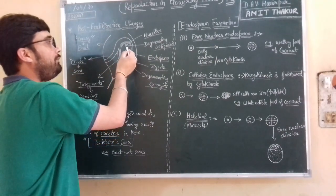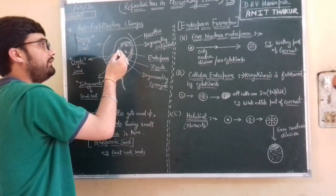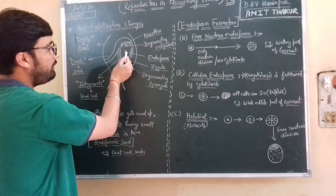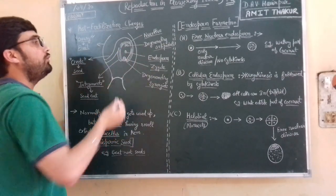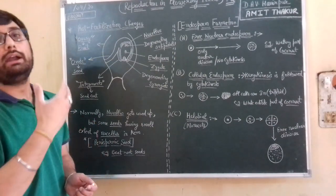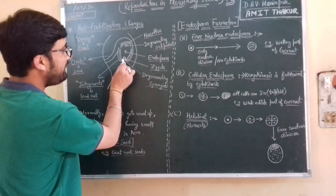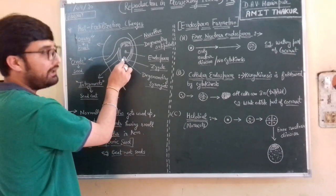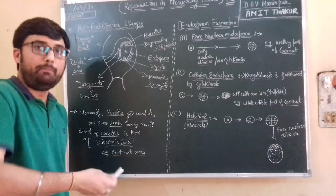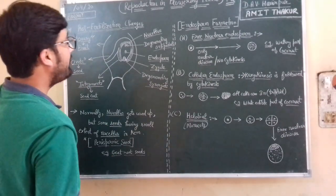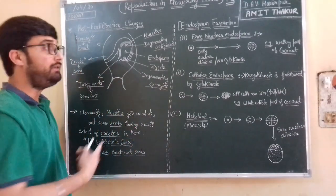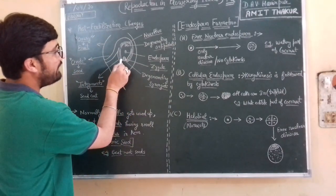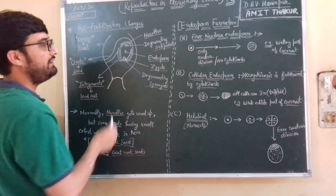Here you can see the antipodals towards the chalazal end, and this is the micropylar end. These antipodals now start degenerating. This is the endosperm, and this endosperm will give nourishment to the growing embryo. This egg cell, after fertilization, has now become a zygote and would become an embryo after some time, getting nourishment from this endosperm. These are the degenerating synergids.